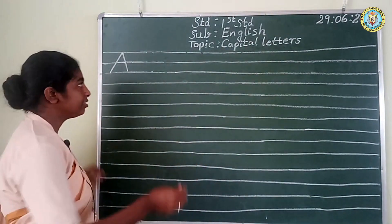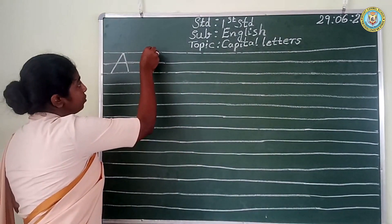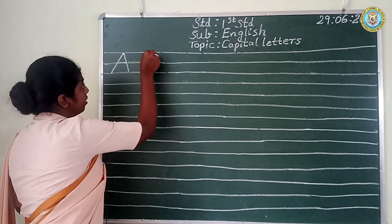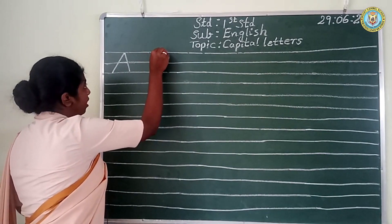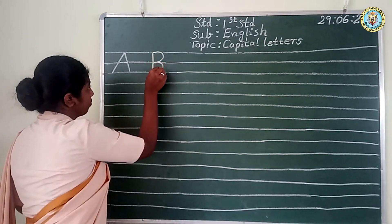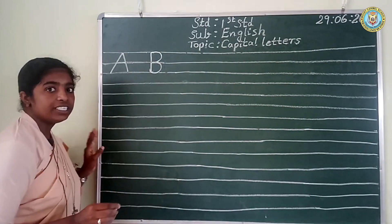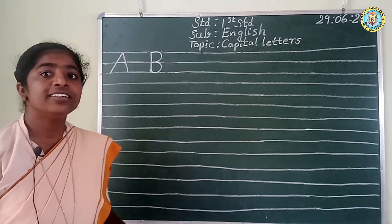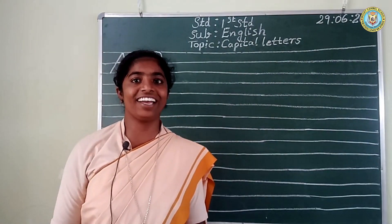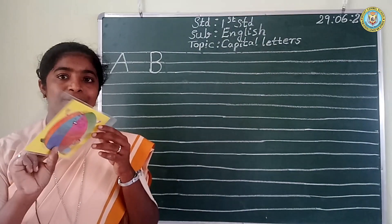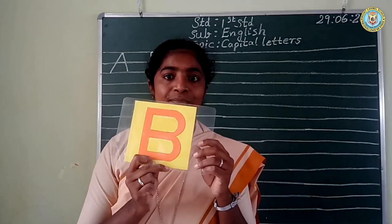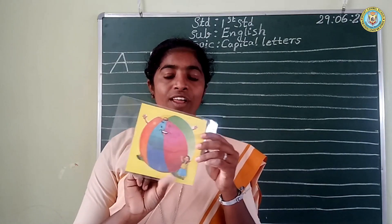Next. The straight line and the big curve. Which letter is this, children? B. Yes, it is right. B. B for ball. B for ball.